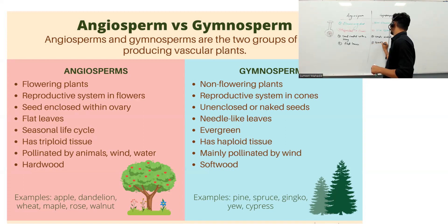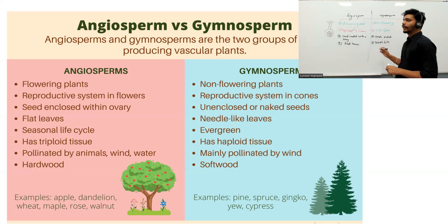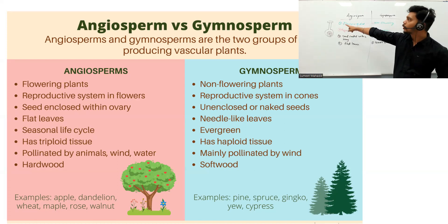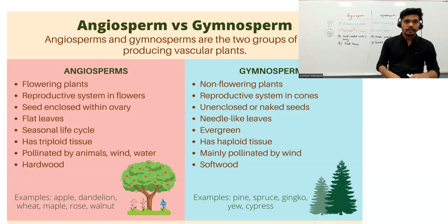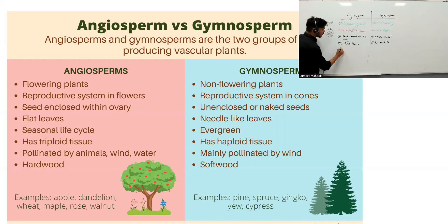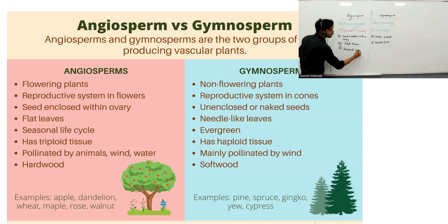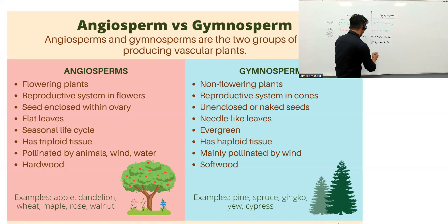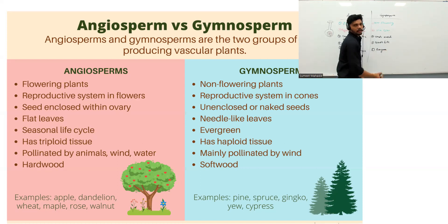Angiosperms follow a seasonal life cycle because flower production is involved. Gymnosperms, on the other hand, are evergreen — they are always evergreen and don't follow a seasonal cycle.